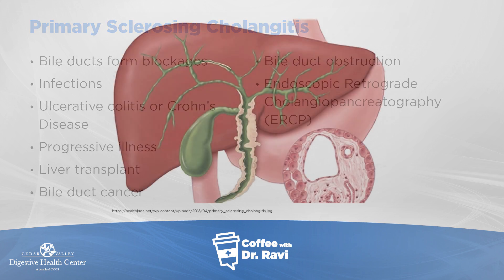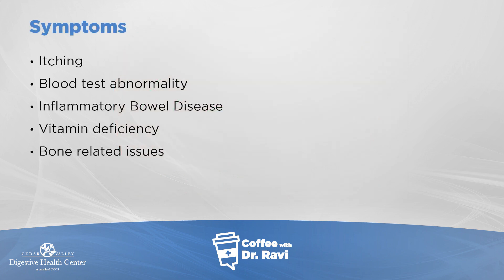So to summarize: if there's itching, a blood test abnormality, or if someone has inflammatory bowel disease, one needs to keep an eye on liver tests, watch for vitamin deficiencies, and monitor for bone-related issues. All of these problems can be prevented, and progression of liver disease can be prevented — and that's what we aim to do.